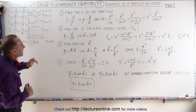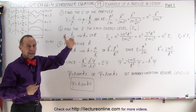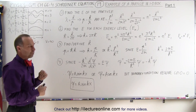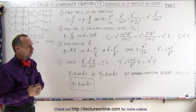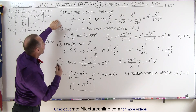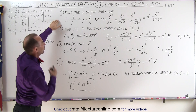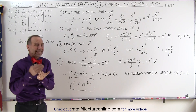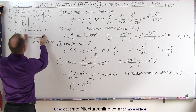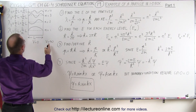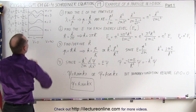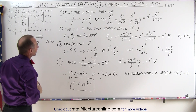Now to find the energy of the particle, we have to go through our six steps — I only have room for four on the board, and we'll do the last two on the next video. In the first step, we're trying to find the energy of the particle. Remember, there's only kinetic energy here, because there's no potential energy inside the box. The potential energy is infinite outside the box and zero inside.